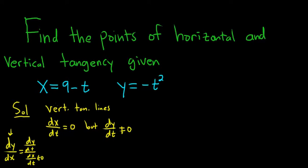So let's see if this can happen. Well, if we compute dx/dt in this problem, dx/dt in this case is going to be equal to just negative 1. And this is never 0. This is not equal to 0. So there are no vertical tangent lines. So no vertical tan lines.